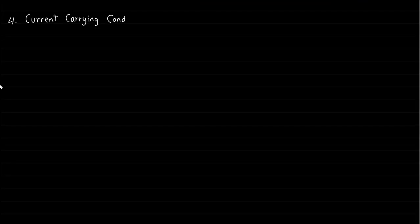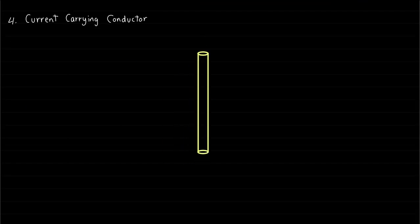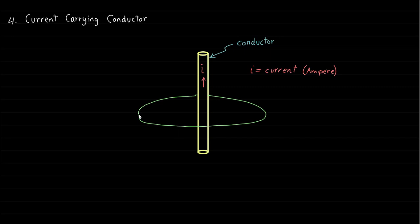The fourth and last method of producing the magnetic field is by using a current-carrying conductor. Once the current flows in the conductor, a magnetic field is produced around this conductor.